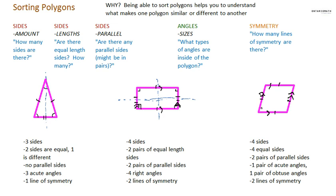What kinds of angles are inside of it? Well, there's a pair of acute angles. Acute, less than 90, less than 90. A pair of obtuse, greater than 90, greater than 90. And are there lines of symmetry?